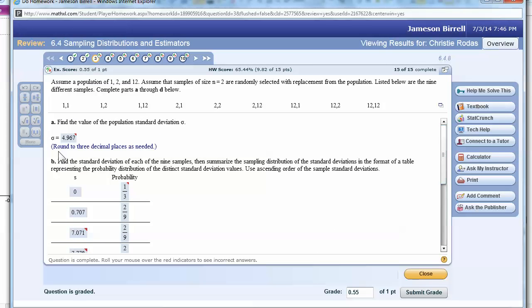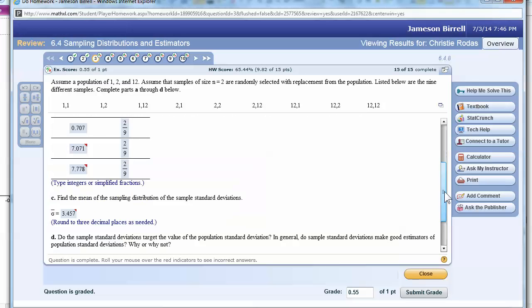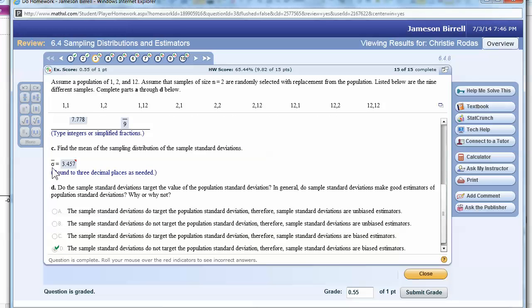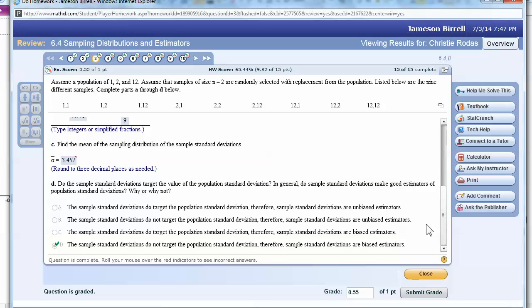You're really going to need this notation when you get to chapter 8. All right, what did we find out? We found out that the standard deviation from the actual population that we originally calculated was 4.967. But then when we found the sampling distribution of sample standard deviations when samples are taken at size 2, and we took all possible samples, which there were 9, we get this and find the mean of that probability distribution, and we get this mean. Again, if it's an unbiased estimator, they would target, they would equal each other, they would match, right? They don't notice that.